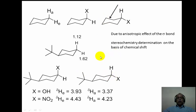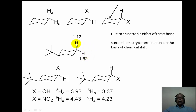In tert-butyl cyclohexane, the axial and equatorial hydrogens are fixed in their positions. NMR can clearly tell the difference: the equatorial hydrogen appears at 1.62 ppm whereas the axial hydrogen appears at 1.12 ppm.